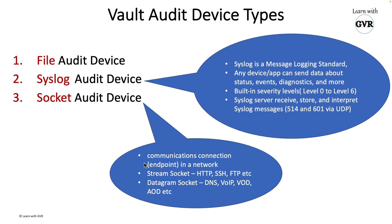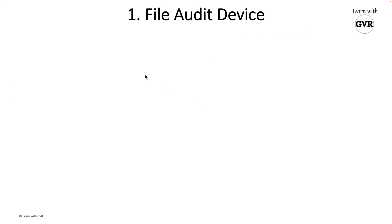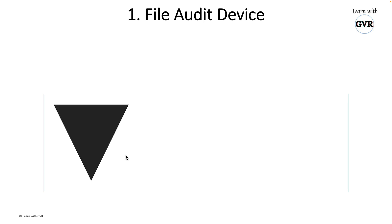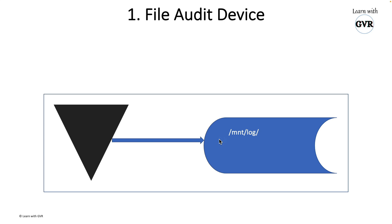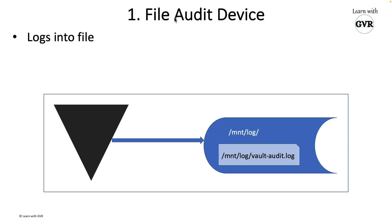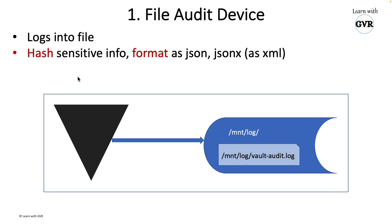Elasticsearch and Splunk integrations come into the picture via the socket type. For the file audit device: you can mount an EFS or NFS drive, for example at /mnt/log, and create a vault-audit.log file to pump logs into. The file audit device stores logs locally or anywhere in the file system. Any retrieved secrets are hashed using HMAC SHA256 before being stored in the log file, so nobody can decode them. The format is JSON (and JSON-X, which is JSON in XML form).